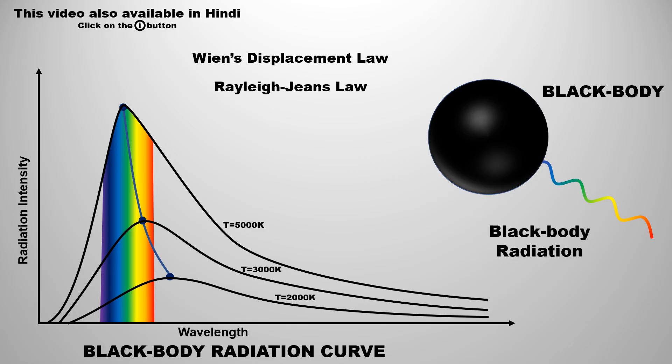Wien's displacement law and Raleigh's radiation law tried to explain this curve. But no one was able to successfully explain this curve. It seemed that it is not possible to explain it by classical physics.